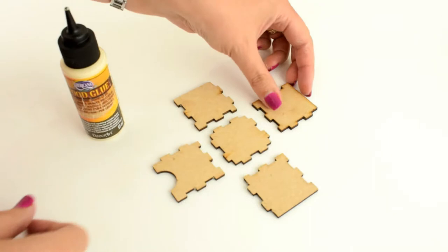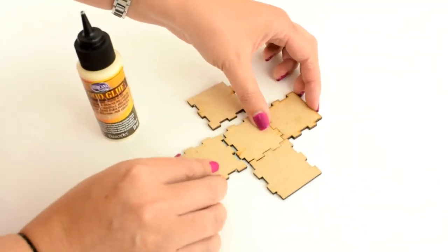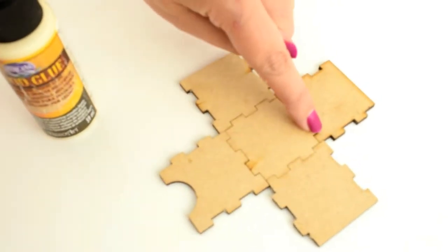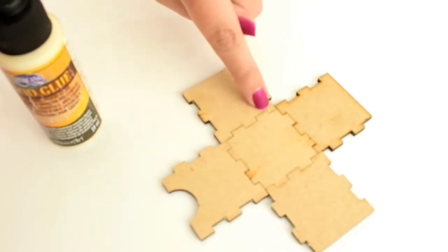Next onto the drawers. You want to push all the pieces together to ensure that you've got the correct fit before doing any gluing. In each corner drawer you'll see that there is a big square and a small rectangle. This is the same for every corner.